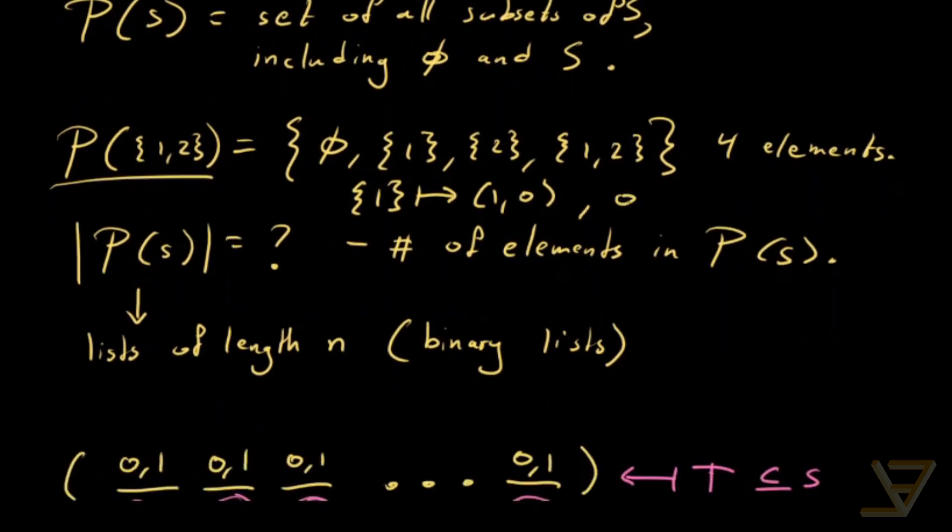And the empty set would get mapped to 0, 0 because neither 1 nor 2 is in it.